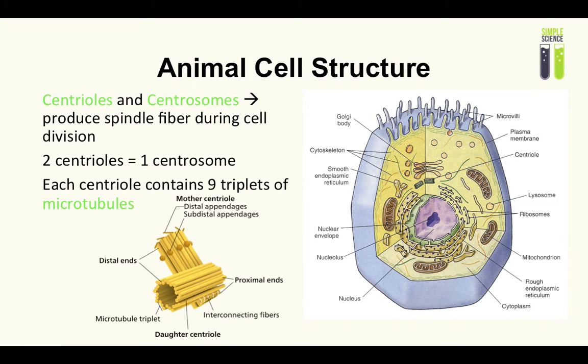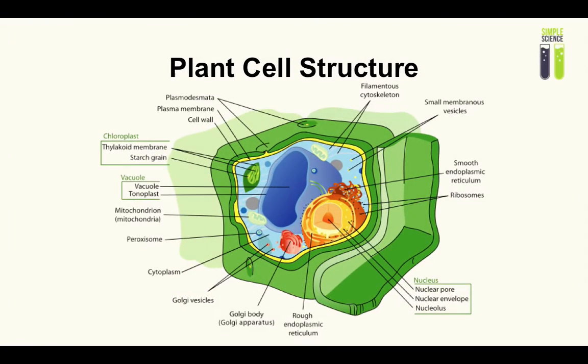Finally, we made it to plant cell structure. It means we're almost done. What do plant cells have? Most of these things are pretty much what we have covered, except for chloroplast, large permanent vacuole, and cell wall. These are the three things that a plant cell has which an animal cell doesn't have. Things which I mentioned such as centrioles and microvilli, plants don't have those.